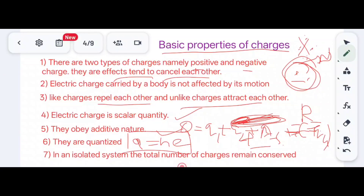Charges are quantized, that is q = ne, where n is an integral multiple and e is the magnitude of the elementary charge. In an isolated system, the total number of charges remain conserved — the total positive charges equal the total negative charges, so the net charge is conserved.